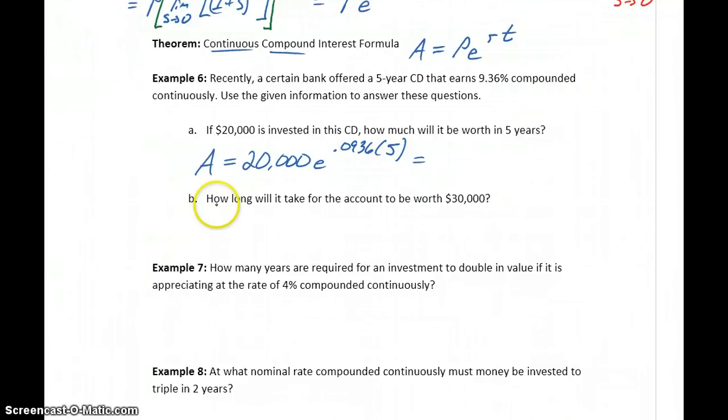So another question we could ask under these same circumstances is, how long will it take that account to be worth $30,000? So in this case, we would need to solve, and we'll actually take some solving. We would need to solve $30,000, since that's the final amount that we want, equals $20,000 times e to the 0.0936 times some amount of time, t.